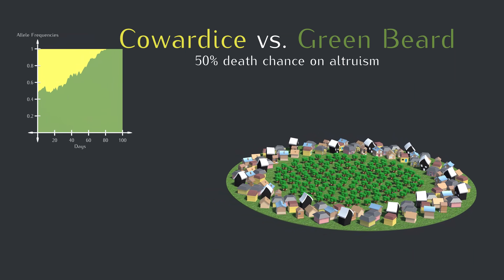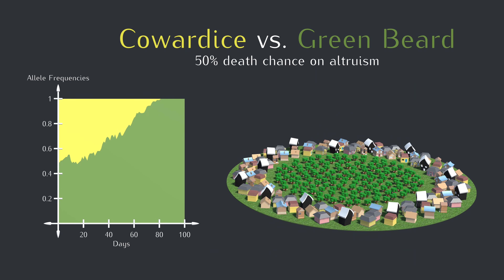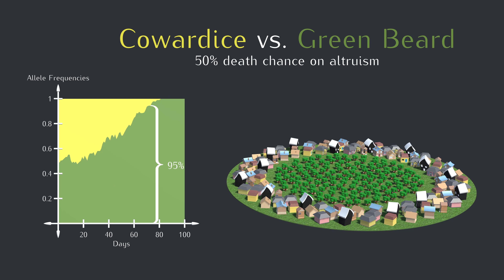That actually works pretty well. The green beard allele drove the cowardly allele to extinction, and decisively so. But again, we should test it with many runs and with different settings. I ended up testing the 50% and a 90% chance of getting eaten for 30 runs each.